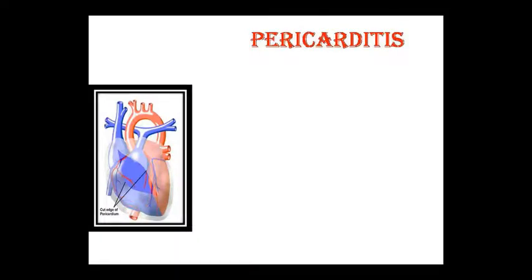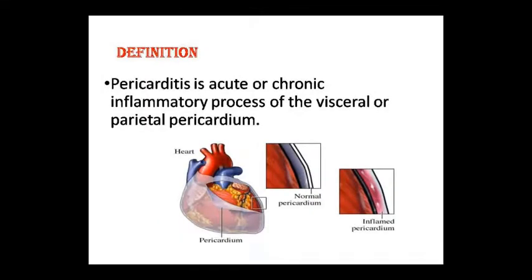Good morning class. This is our new pathology class in which today we will study about the third topic of CVS, that is pericarditis. Pericarditis means inflammation of the pericardial layer of the heart. Pericarditis is an acute or chronic inflammatory process of the pericardium, involving the visceral and parietal pericardium layers.